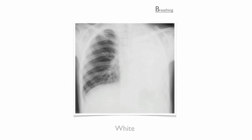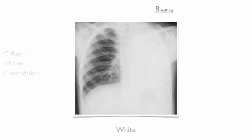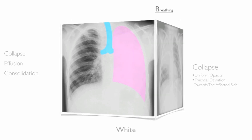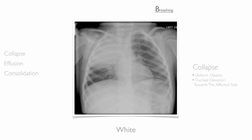Let's now take a look at the white lung. Common causes of the white lung include collapse, effusion and consolidation. Collapse presents with uniform opacity and tracheal deviation towards the affected side. Note, however, that tracheal deviation does not always occur. In this image showing right upper lobe collapse, there is no tracheal deviation.